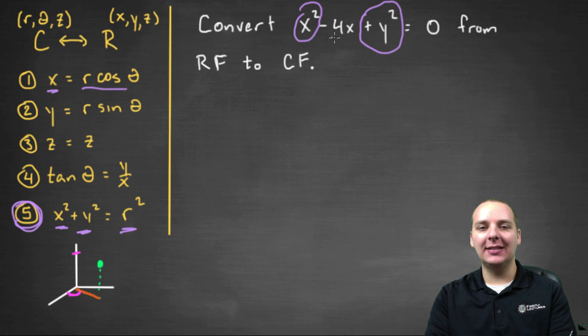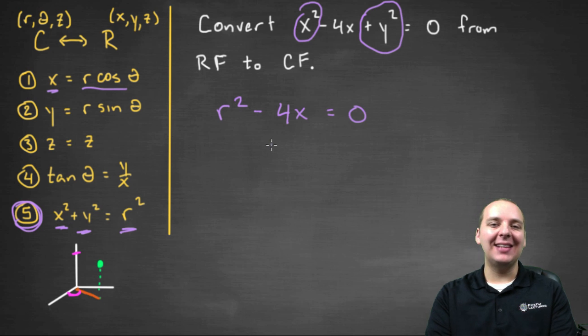So I can take these guys out and swap that with an r squared. Right now I'd have r squared minus four x equals zero, but that's not sufficient. That is not a correct answer because I still have an x there, which is still in the old rectangular form.